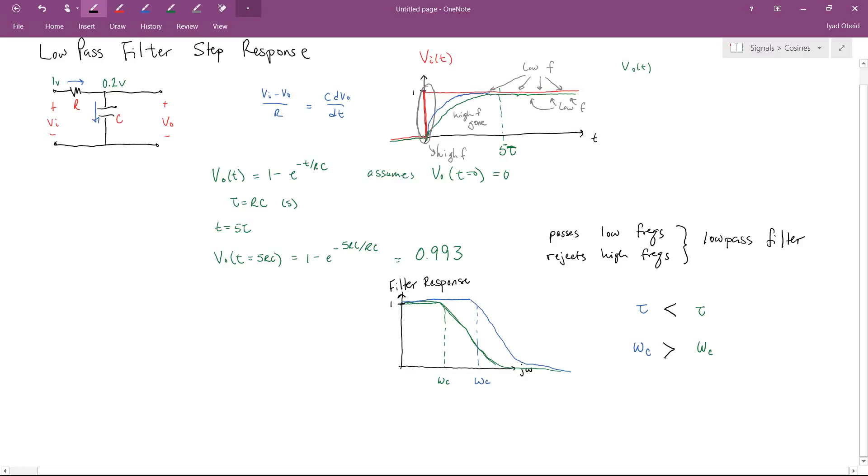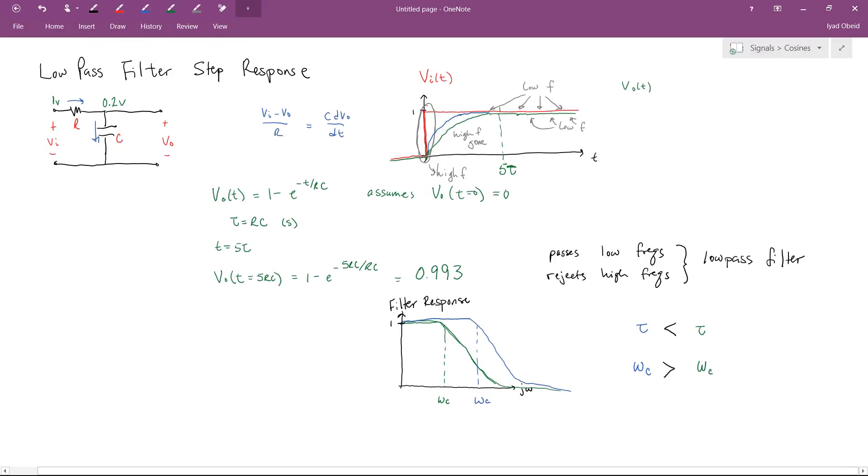So this is pretty interesting. We've taken a low pass filter, we've looked at its step response, which came as a result of analyzing the differential equation. And then just by thinking about it analytically, we've been able to make some signal style analysis to infer that this is a low pass filter and to infer how the value of the time constant, RC, affects the cutoff frequency of the filter.